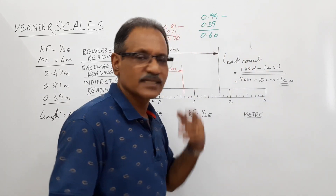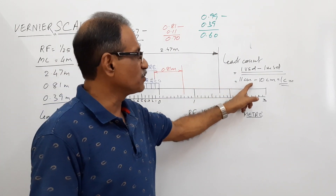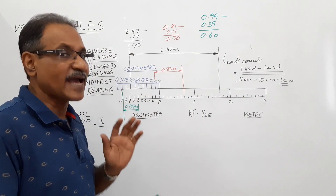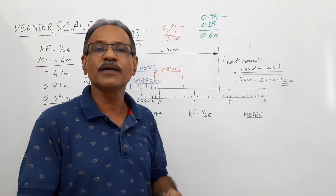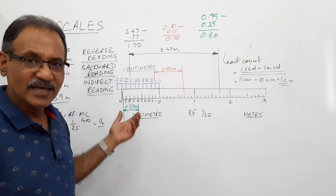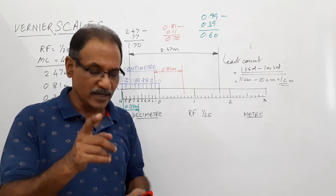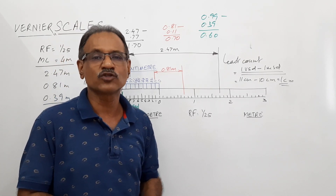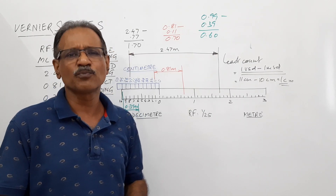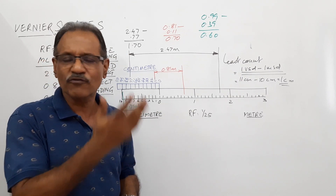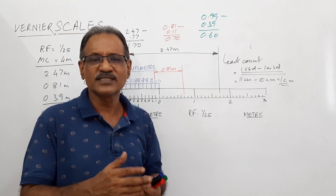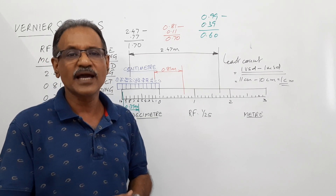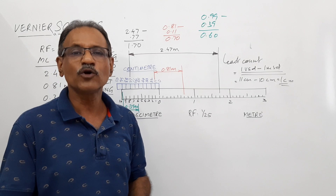If the least count is given, you can manage the construction using the relationship: least count equals 1 vernier scale division minus 1 main scale division. The divisions can be adjusted depending upon the least count. In this question, the least count is not specified. If you have any difficulty with a vernier scale problem, put it in the comment box and I can solve it. You can also send it via WhatsApp or call me and I will post the solution.